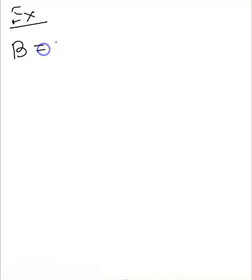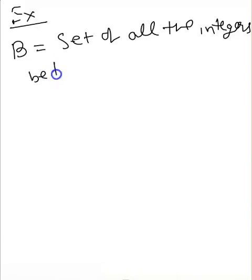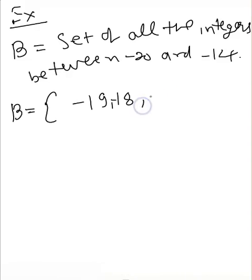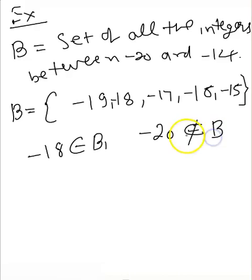Let's take another example. Suppose B is a set of all the integers between minus 20 and minus 14. The values would be: B = {minus 19, minus 18, minus 17, minus 16, minus 15}. Here we can say minus 18 belongs to B, but minus 20 does not belong to B.